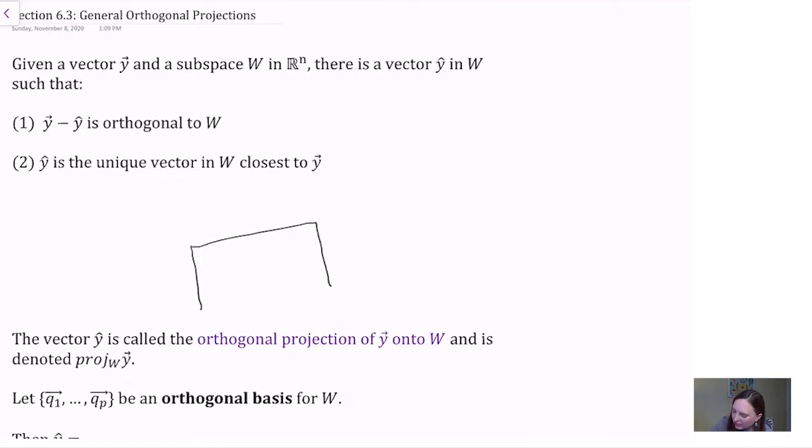Say we have some subspace w of Rn and some vector y that we'd like to project onto w. We look for a vector y hat that is the unique vector in w closest to our original vector y, and when we take the error y minus y hat, that error is orthogonal to the entire subspace w.